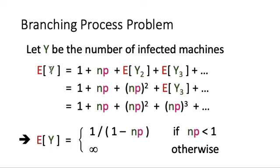So E[Y] = 1 + E[Y_1] + E[Y_2] + ... Since E[Y_1] = NP, E[Y_2] = (NP)^2, E[Y_3] = (NP)^3, and so on. Adding these up, E[Y] = 1/(1 - NP) if NP is strictly less than 1. If NP is greater than or equal to 1, each term is at least 1, and the infinite sum diverges to infinity.